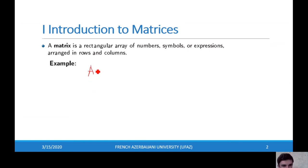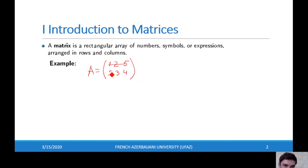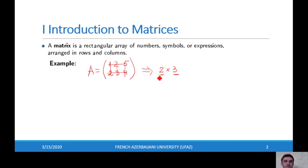For example, A is the matrix with entries 1, 2, 5, 2, 3, 4. You can see here we have two rows and three columns, and this type of matrix is called a two times three matrix. Two shows the number of rows, three shows the number of columns.